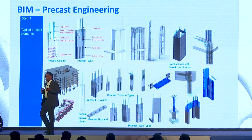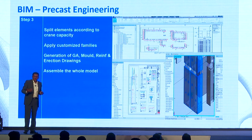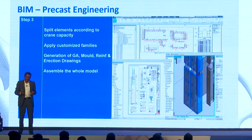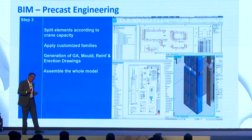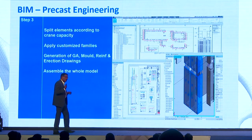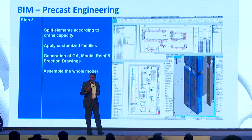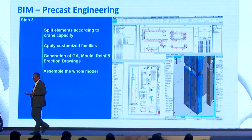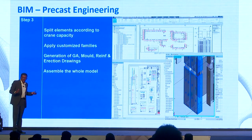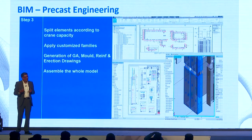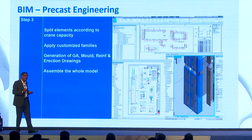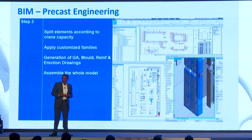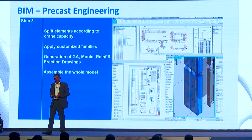Then prepare all the bar bending schedules and provide all this information to the client. We are working with clients in the UK where the precast industry is becoming more and more used, especially in cities like London where it is totally congested. It saves time — a project that can be completed the conventional way in two years can be completed in 18 months. That's a huge saving.